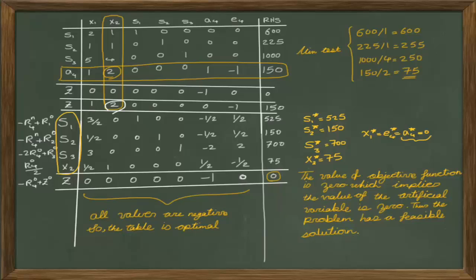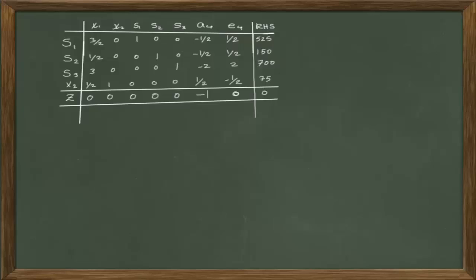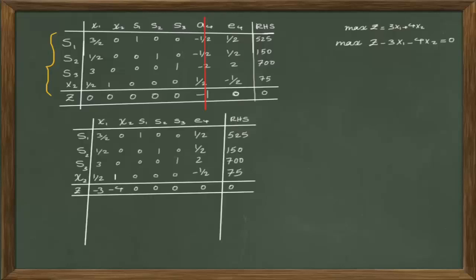Since we got rid of A4 from the basis, we can move to the next phase and solve the problem with the original objective function. If we had reached optimality but still had a basic artificial variable, the problem would have no feasible solution. Since the artificial variable's value has reduced to 0, we remove the column related to A4 and standardize the original objective function to replace it in the row of z.